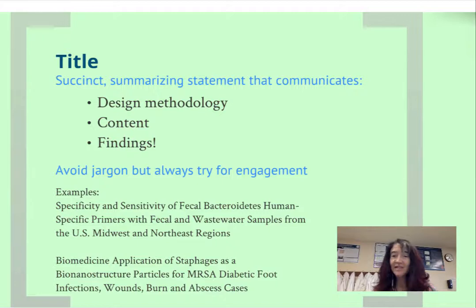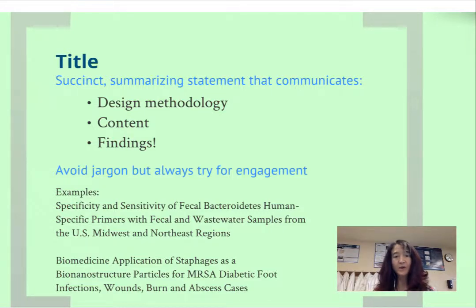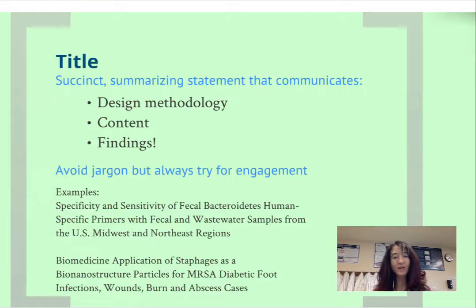I tend to suggest active titles. So for example: 'Measuring specificity and sensitivity of fecal bacteroidetes human-specific primers' — that might add to it. We could probably argue about whether just being about fecal and wastewater samples makes this engaging. The next title is: 'Biomedical application of staph phages as bio-nanostructure particles for MRSA, diabetic foot infections, wounds, burns, and abscess cases.' There's a typo there. You could tell I stumbled over it a little bit — so we could assess that one and you can let me know what you think.